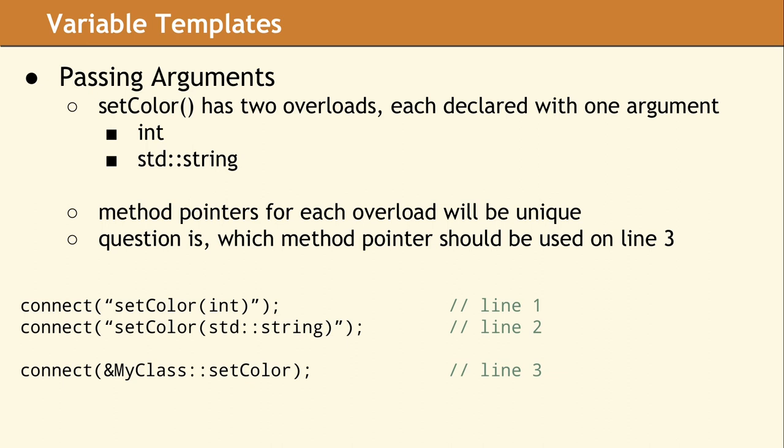So given the example on line 3, which overload should be used? At compile time, this code will produce an error message indicating you have an ambiguous overload.